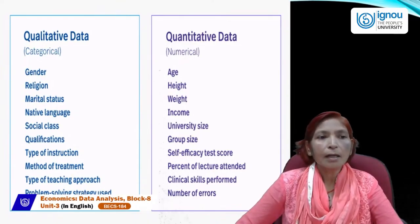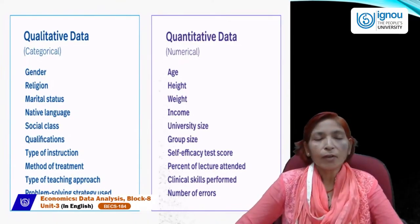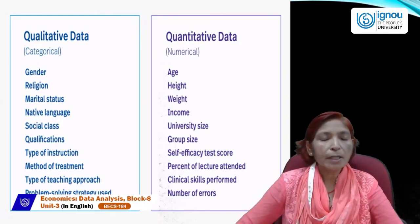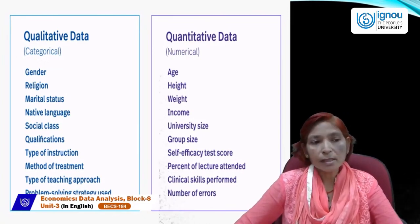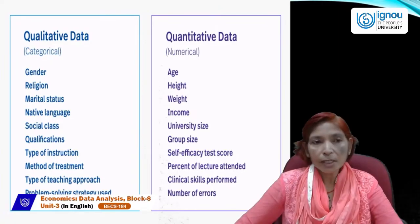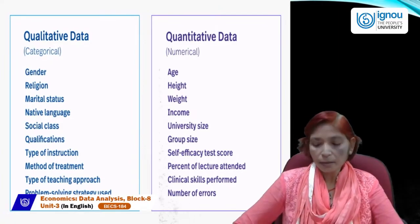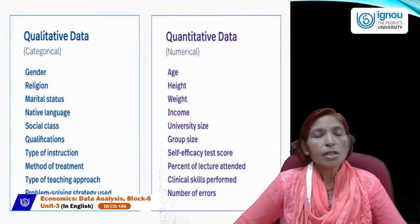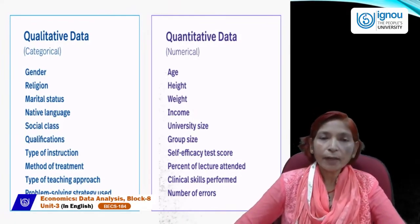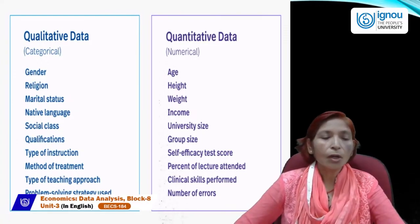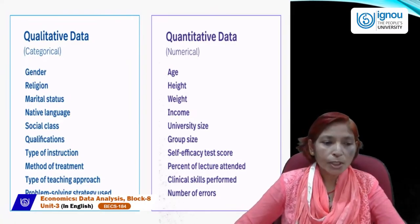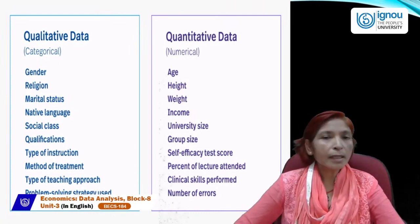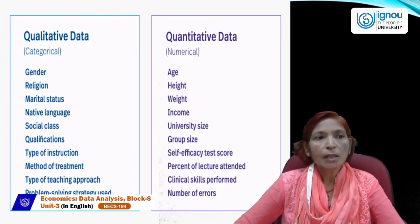Qualitative data are called categorical data. For example: gender (male, female, old age, children), religion (Hindu, Muslim, Sikh, Christian), marital status (married or unmarried), native language (Telugu, Tamil, English, Hindi), social class (upper or lower category), qualifications (higher or lower), types of instruction, methods of treatment, type of teaching approach, and problem-solving strategies. All these types of data are called qualitative data, which can be classified in categorical terms.